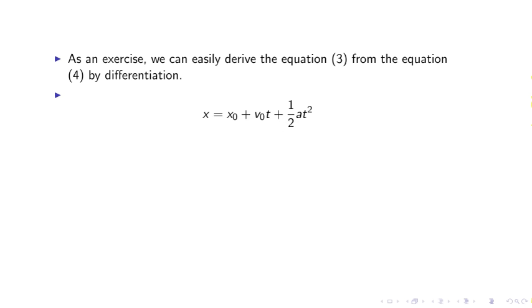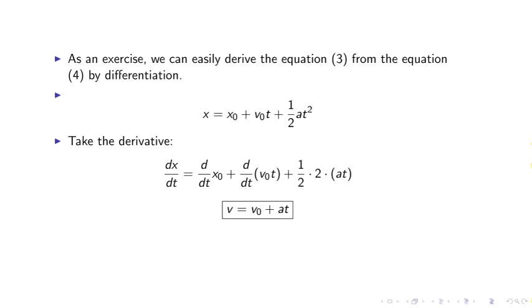For example, we have x equals x naught plus v naught t plus half a t squared. Now, can you imagine taking the derivative of this? Take the derivative, dx dt on the left side. Take the derivative of each of the terms on the right side. We are left with v equals v0 plus a t.